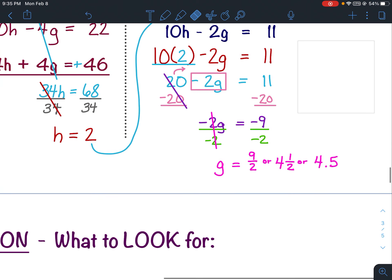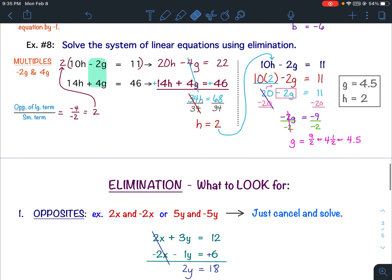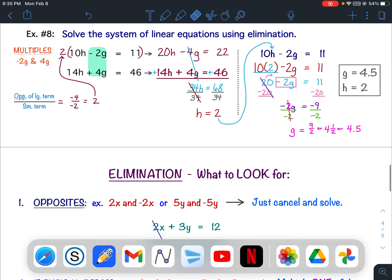So our final answer, g comes before h. So g would be the 4.5, h equals 2. Let's check our answer with the GeoGebra app.